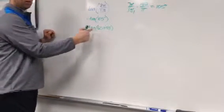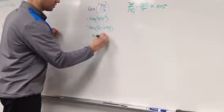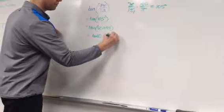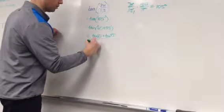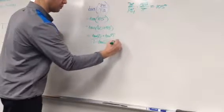Now I'm going to use my sum formula for tangent. So that will be the tangent of 60 plus the tangent of 45, all over 1 minus the tangent of 60 times the tangent of 45.